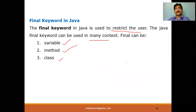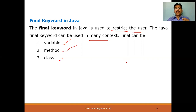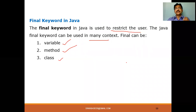So in three ways we can apply the final keyword — to a variable, a method, or a class — for cases where something must be fixed with no change. For example, your Gmail username is final — you can change your password or profile picture, but the username is fixed. Similarly, once you send an email, you can't change the content unless there's an undo option. These are real-world cases where the final keyword concept applies.